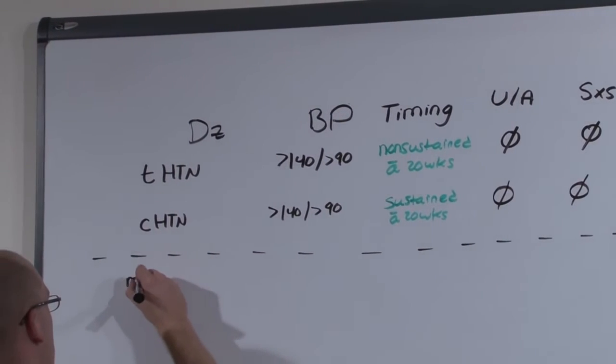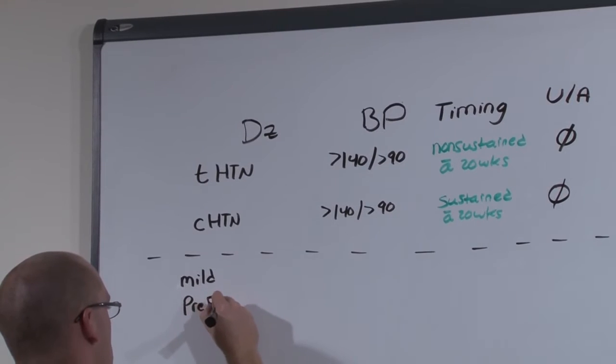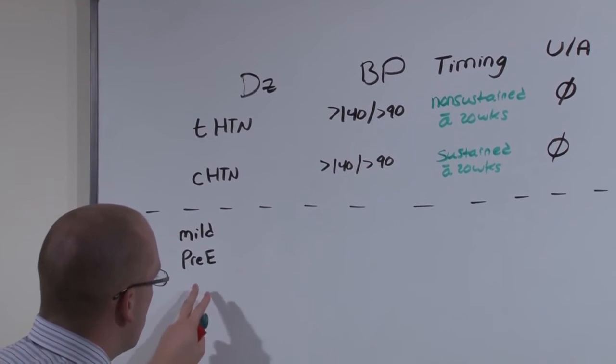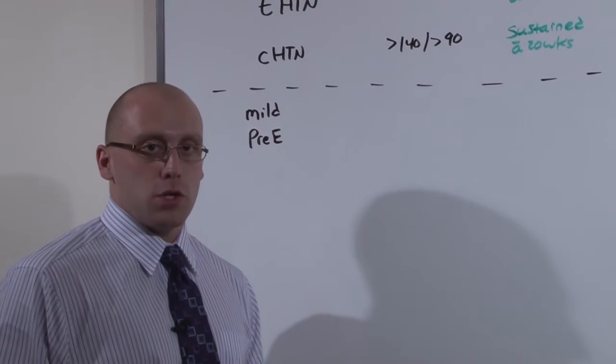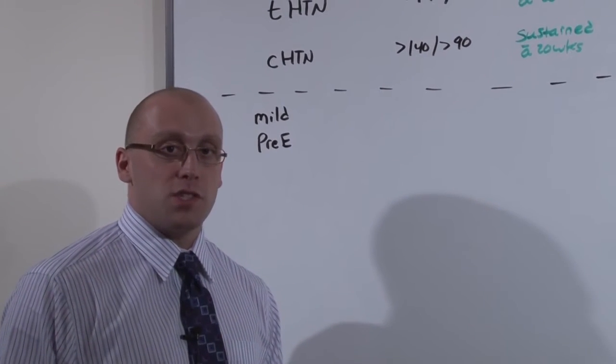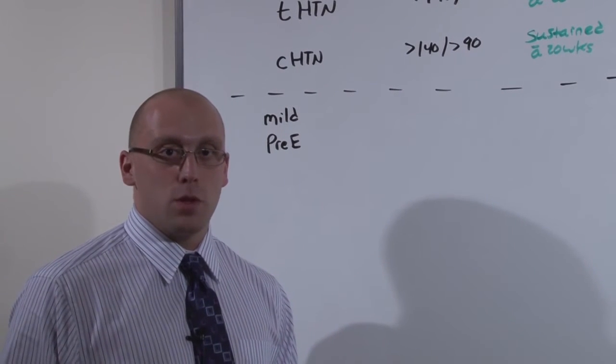Mild preeclampsia, actually all preeclampsia and eclampsia, is a product of placental contents being released. As that happens, vasoconstriction occurs. Vasoconstriction causes hypertension, and it also causes thrombosis. Thrombosis causes clots.